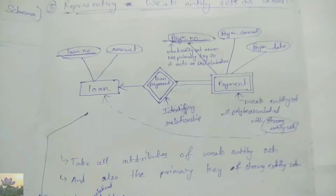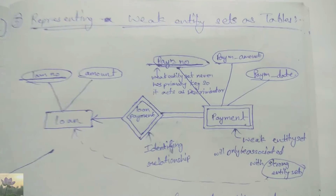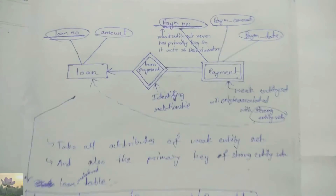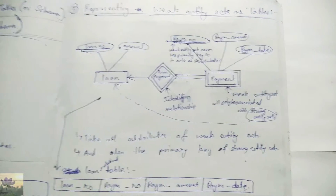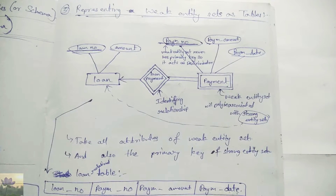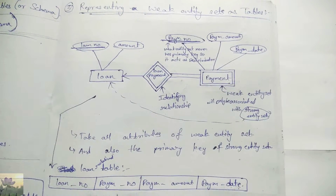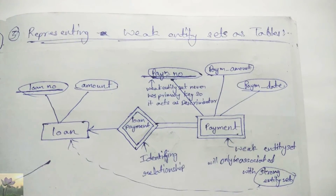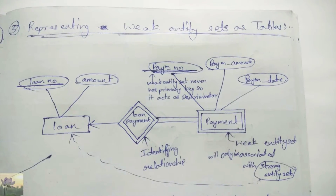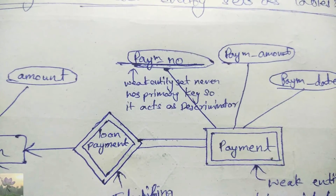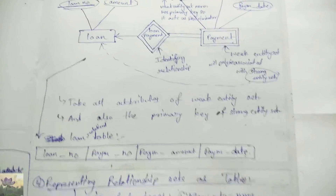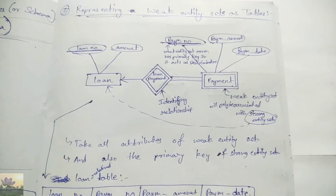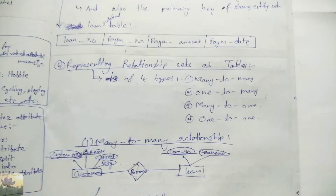The third type is the representation of a weak entity set as a table. This example consists of loan and payment, where loan is a strong entity set and payment is a weak entity set, with an identifying relationship indicated by a double diamond. The loan entity has attributes loan number and amount, where loan number is the key attribute. The weak entity payment has attributes payment number, payment amount, and payment date. Since a weak entity set cannot exist without a strong entity set, we consider loan number, payment number, payment amount, and payment date together.